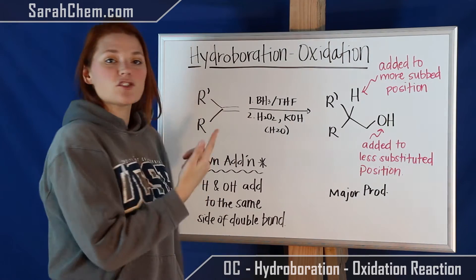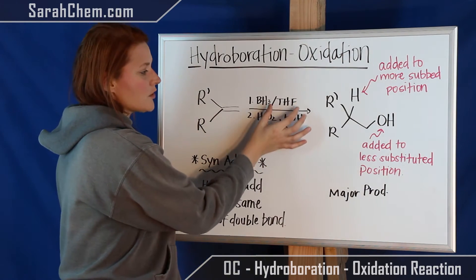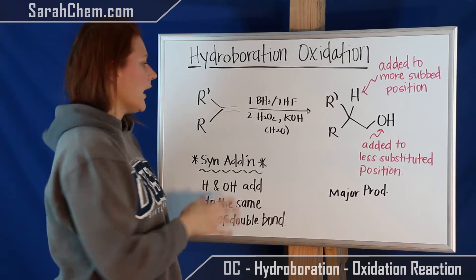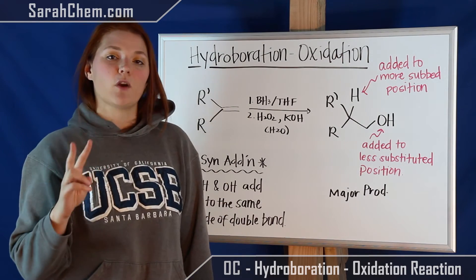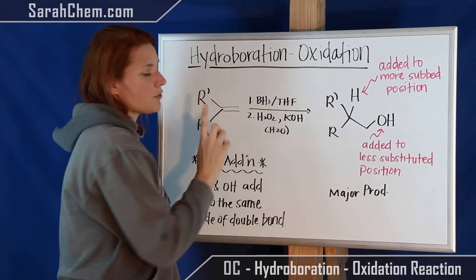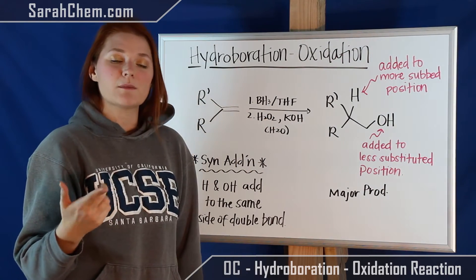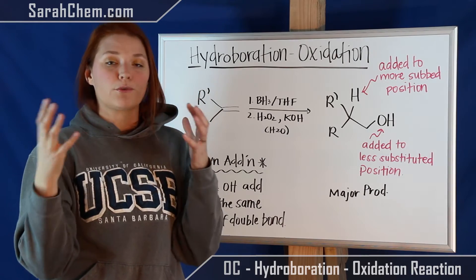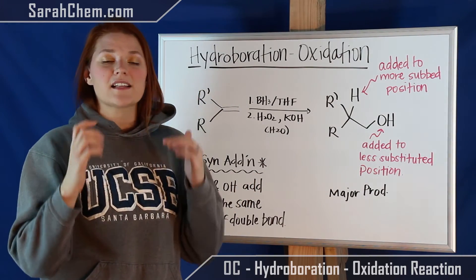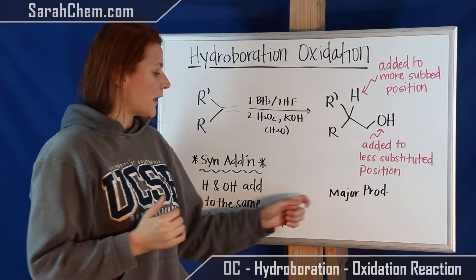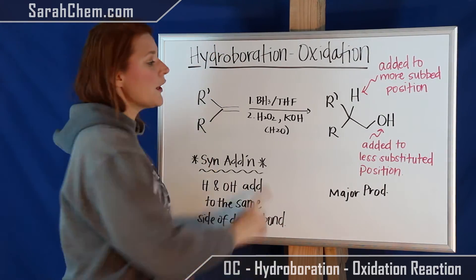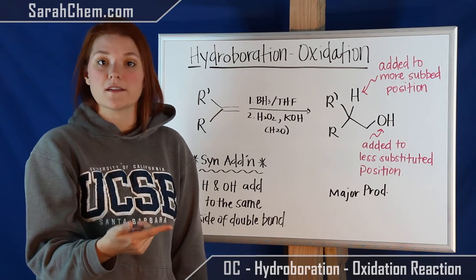Something to note: BH3 in THF is what we're saying here. The THF is important because it's actually going to stabilize the BH3, which in solution is actually going to be forming a dimer. Now, we are saying BH3, but oftentimes you'll see something where the boron has much bulkier groups attached to it, something like 9-BBN, and the reason for that is it's going to increase the amount of major product that you get out, pushing the reaction further towards producing the final product that you want.